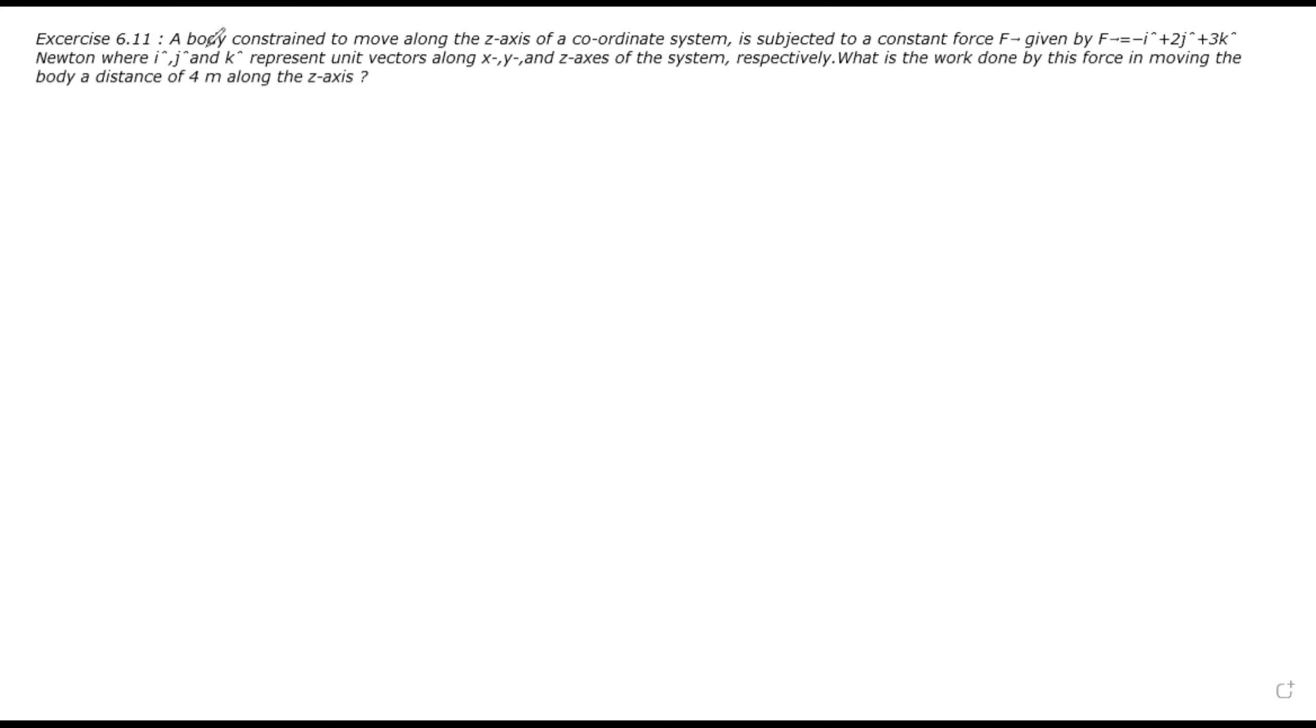Exercise 6.11. A body constrained to move along the z-axis of a coordinate system is subjected to a constant force F given by F equals minus i-cap plus 2j-cap plus 3k-cap Newton, where i-cap, j-cap, k-cap represent unit vectors along x, y, and z-axis of the system respectively. What is the work done by this force in moving the body a distance 4 meter along the z-axis?